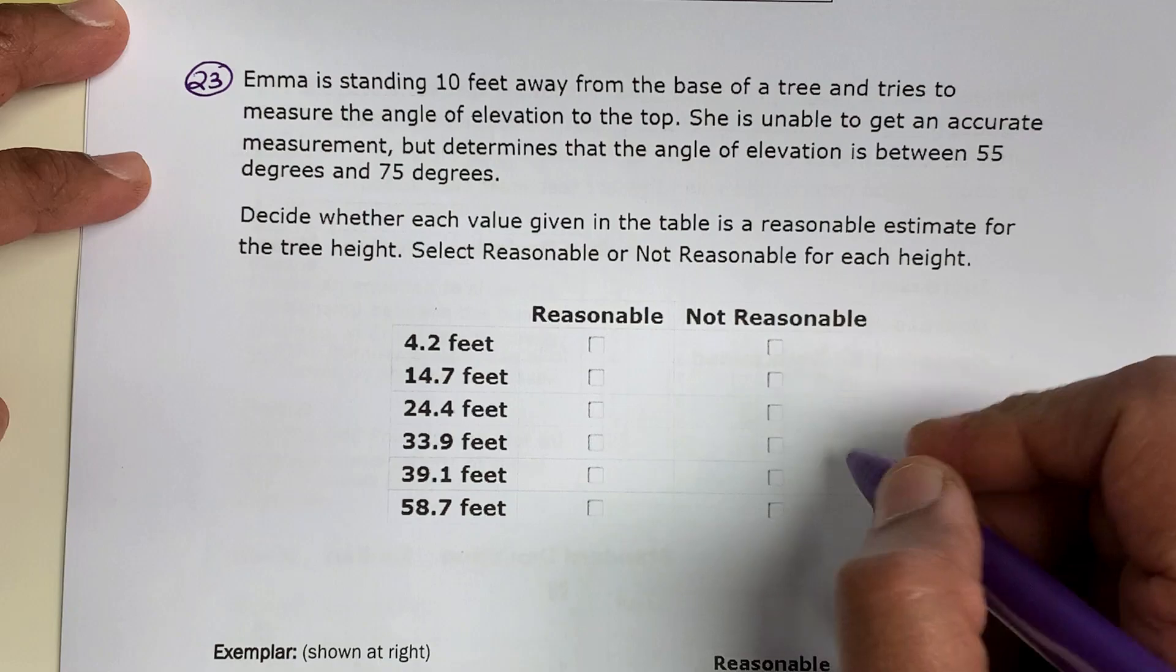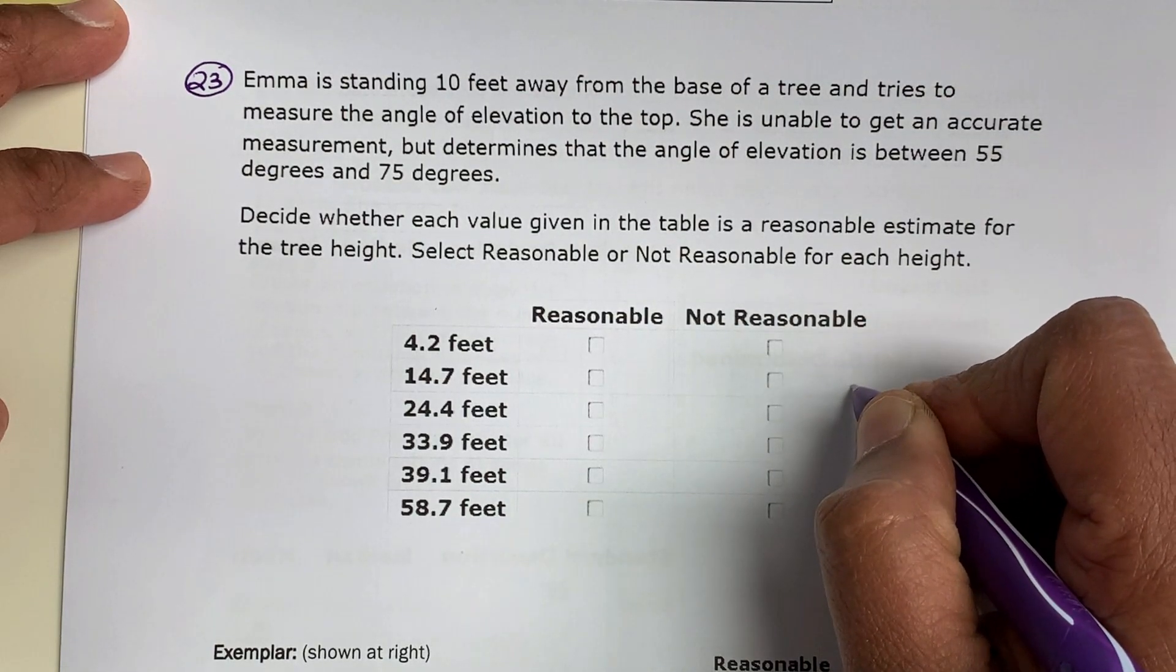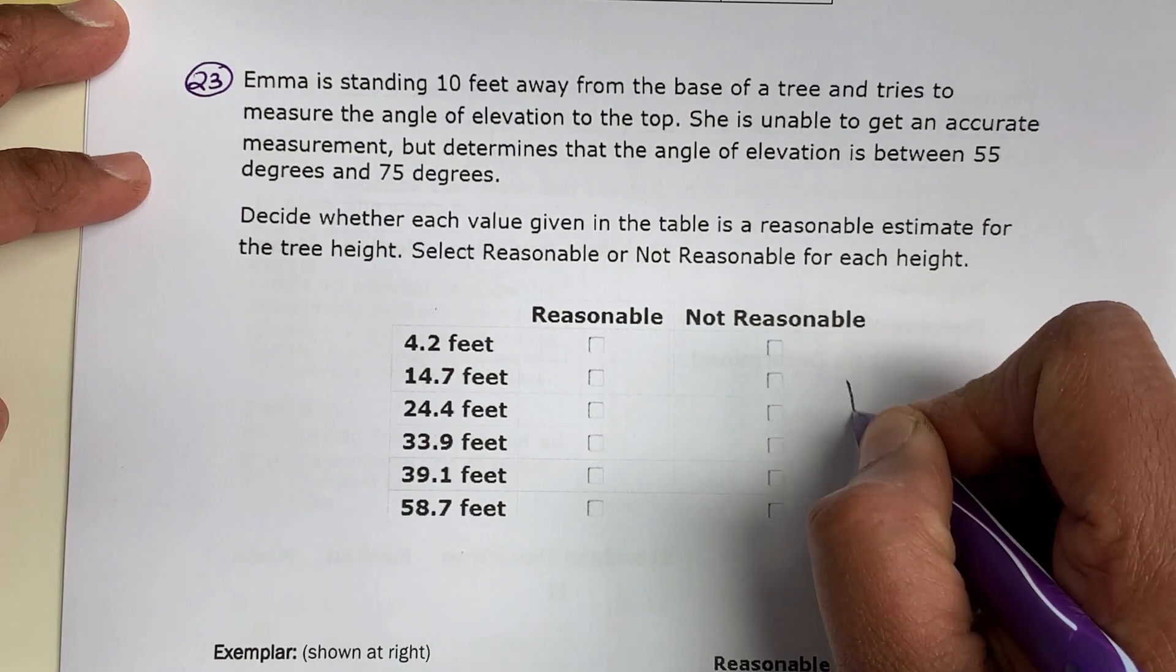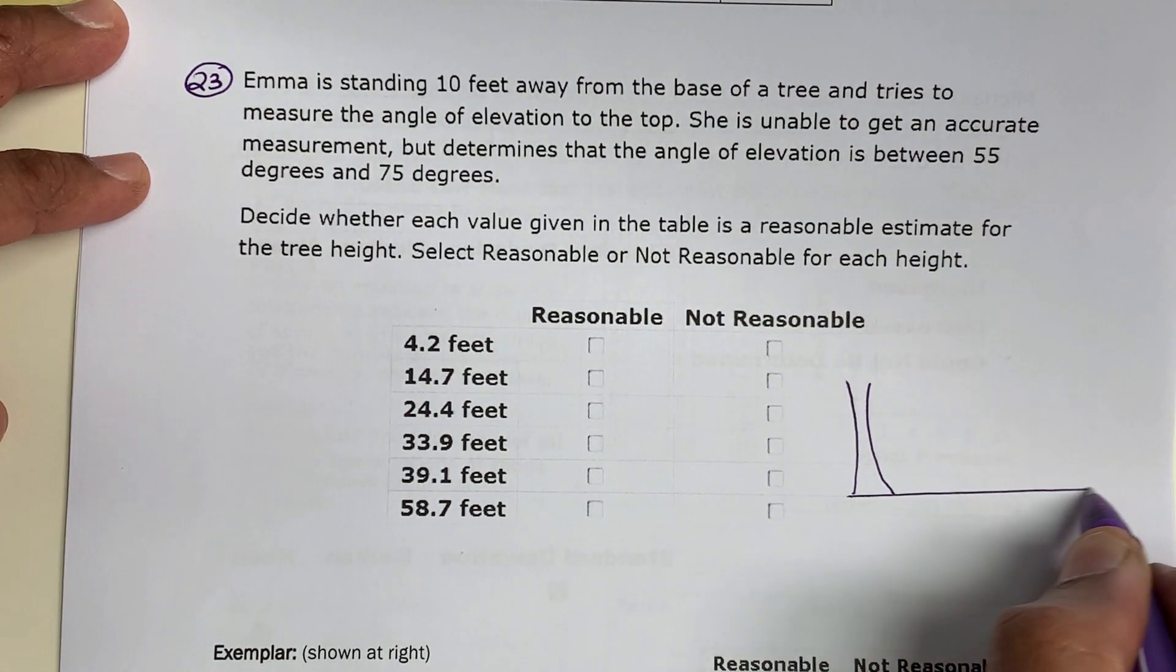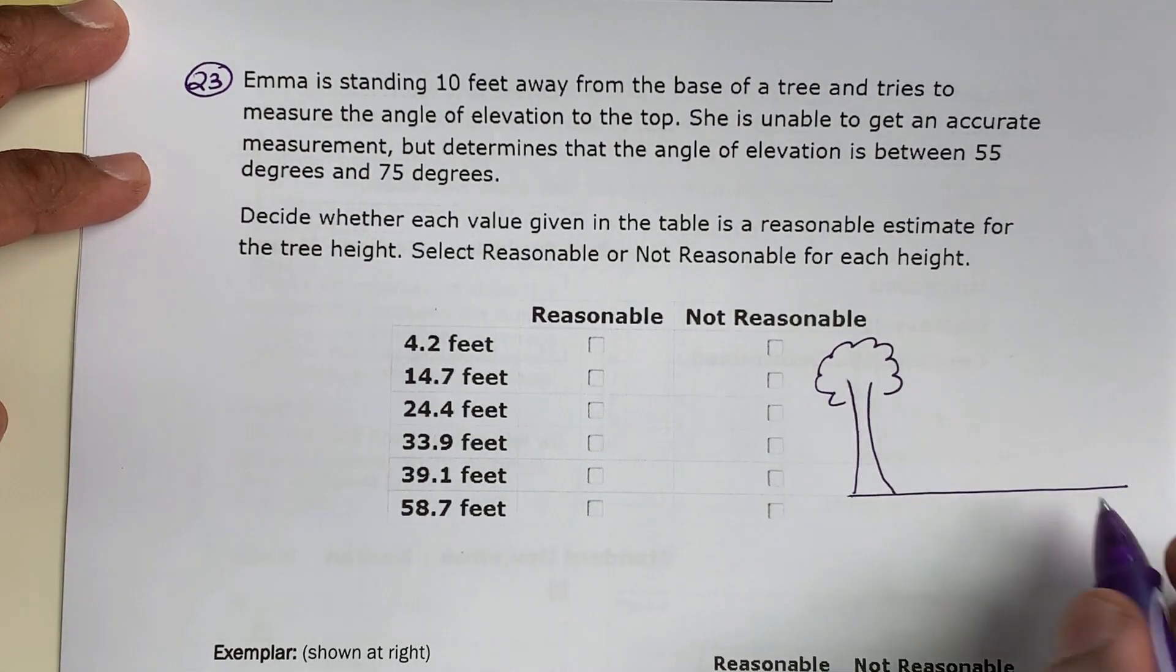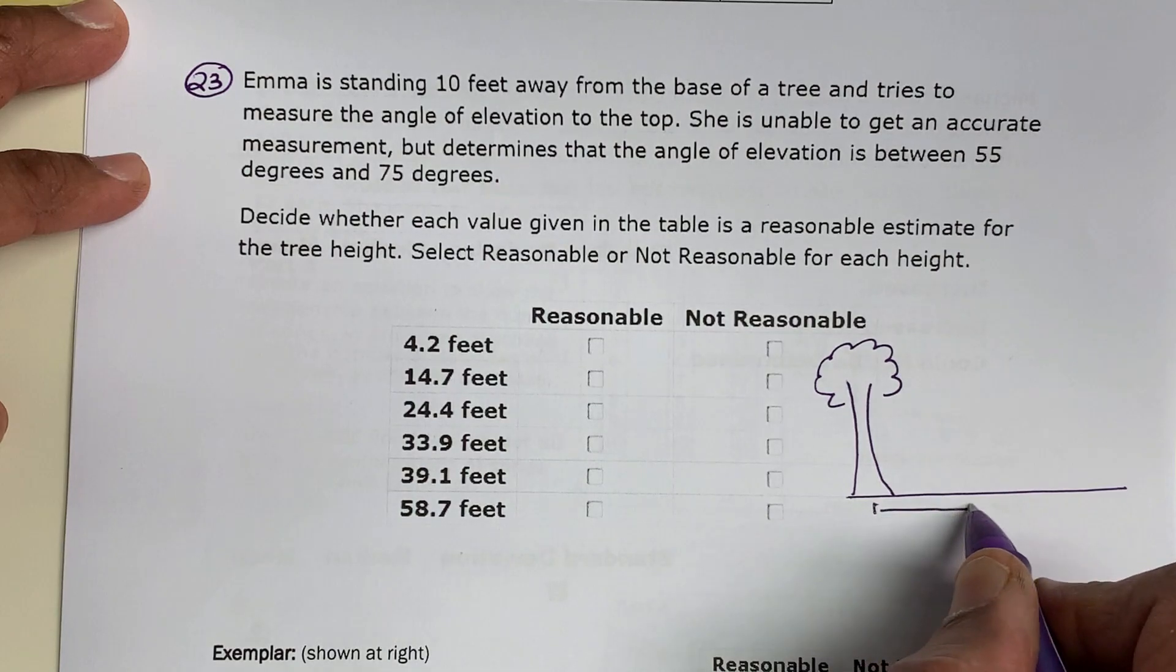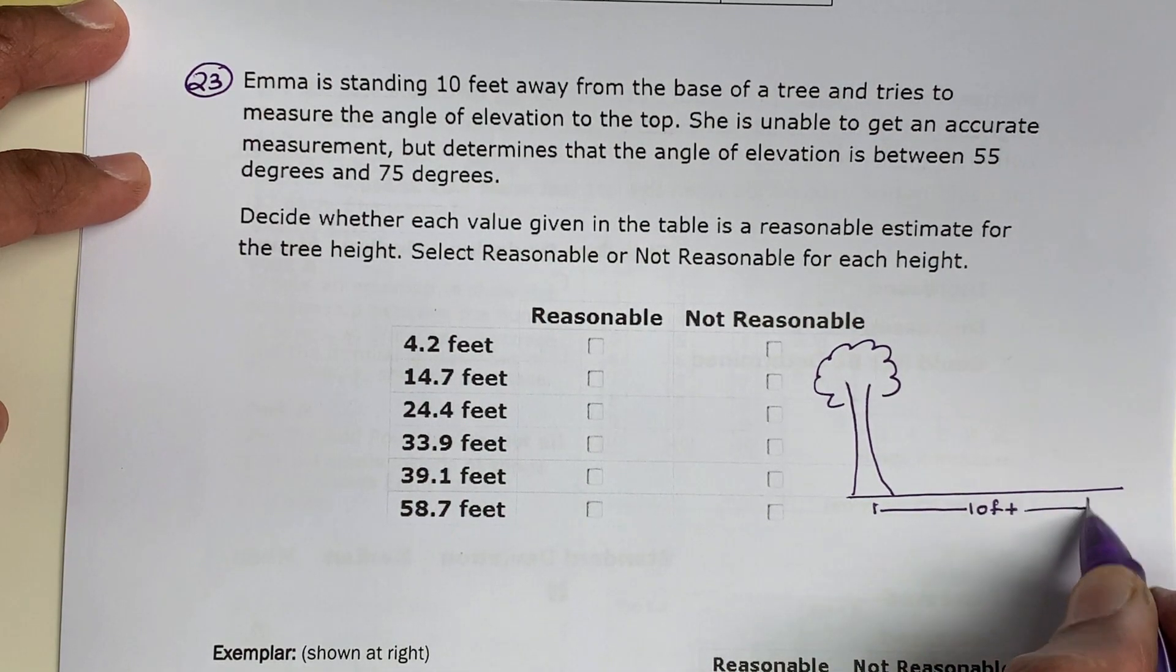I'm going to draw the question out. Emma is standing 10 feet away from the tree. I'm going to draw a tree. Here is a tree, and let's say Emma is standing 10 feet away from the tree, maybe right here.